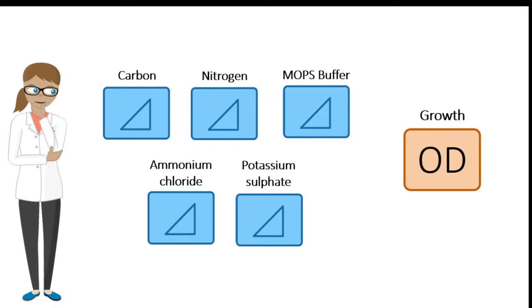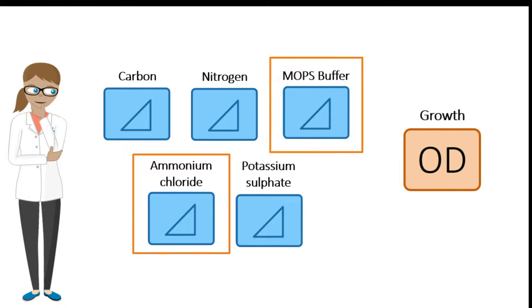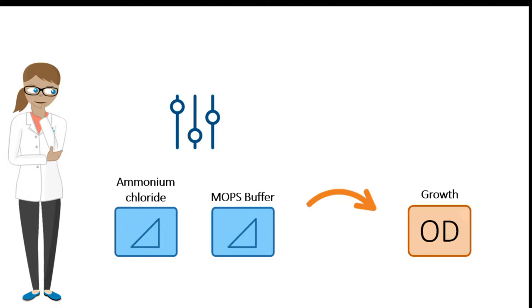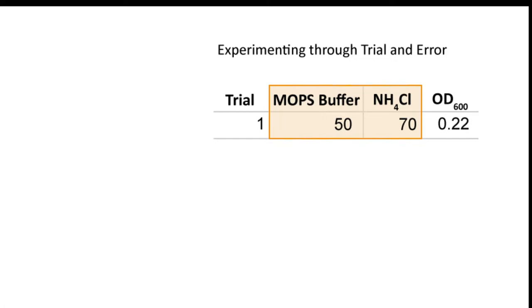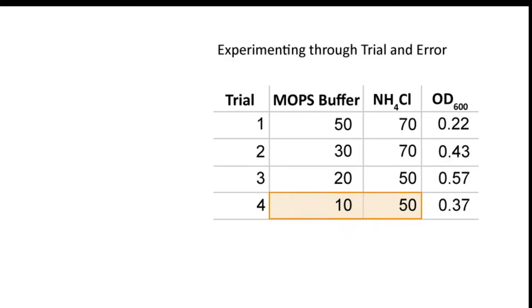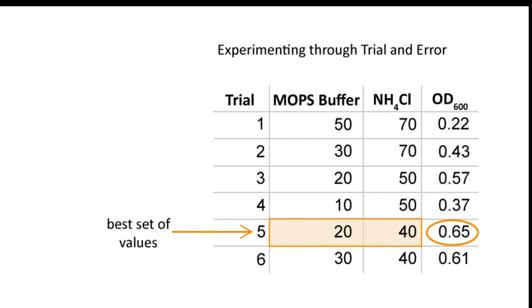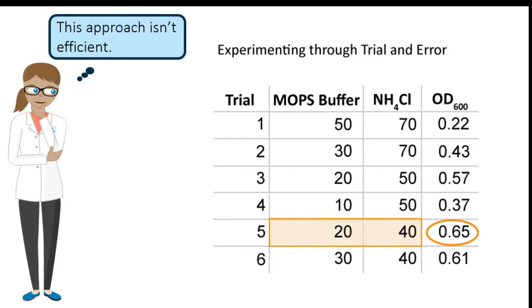To start, we will focus on studying two factors, the amount of MOPS buffer and ammonium chloride. Anna's goal would be to find the concentration of these two factors that will result in maximum growth. How would she approach this? Anna might experiment in an ad hoc fashion, using trial and error, where she tests different concentrations of these two factors and sees what the resulting growth is. She might conduct a trial at starting values for the two variables and record the optical density after 24 hours, then adjust one or both values based on her results, and continue until she thinks she has found the best set of values. We hope you can see that this approach is not very efficient, even if it is guided by expertise or literature.